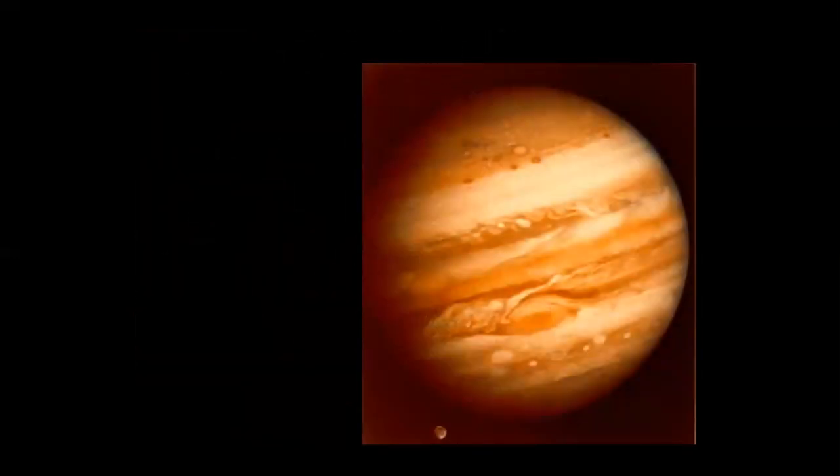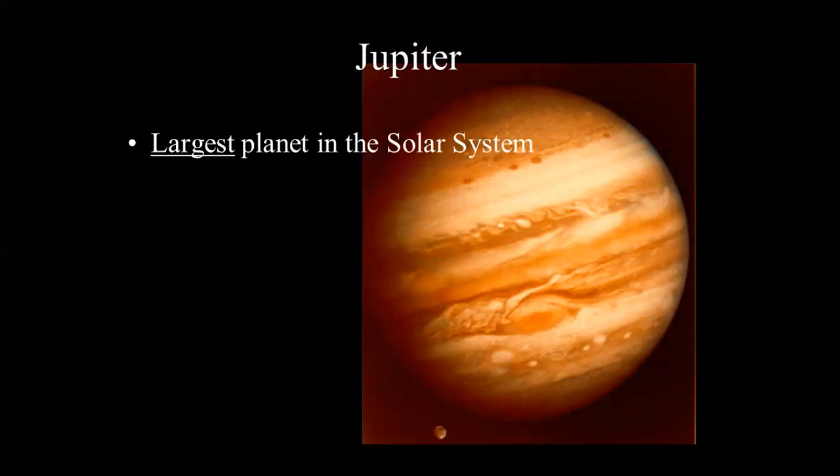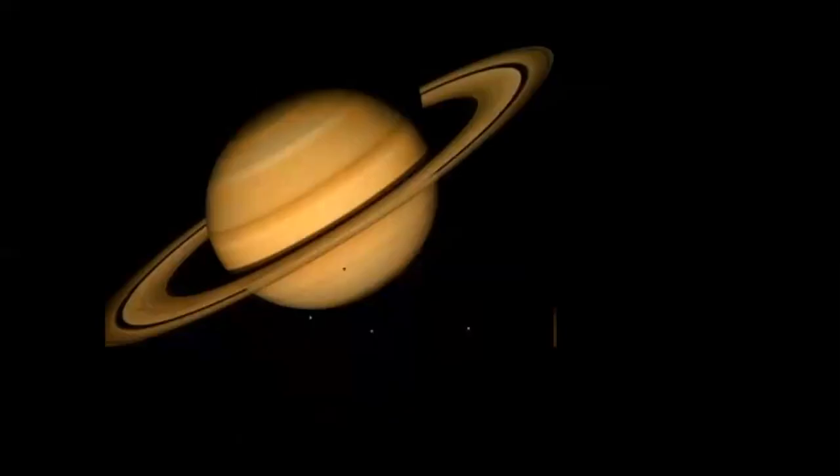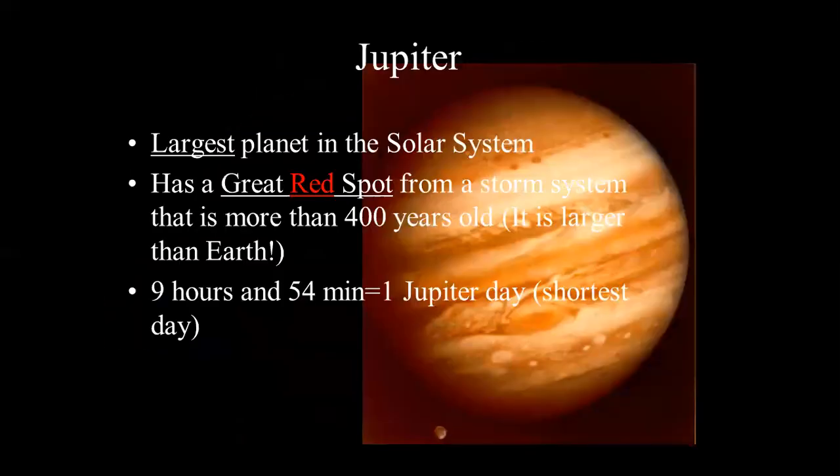First among the outer planets is Jupiter. Jupiter is the largest planet among all the planets. It has a great red spot from a storm system that is more than 400 years old. It is larger than Earth. It takes 9 hours and 54 minutes for Jupiter to spin.